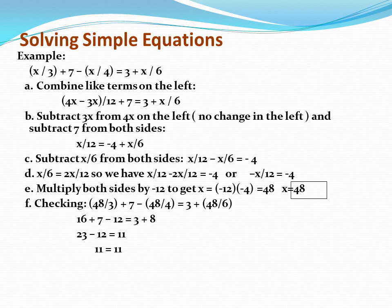Checking, we write 48/3 + 7 - 48/4 = 3 + 48/6, replacing x with 48. Simple division gives us 16 + 7 - 12 = 3 + 8. We have 23 - 12 = 11, and 11 = 11, confirming our solution is correct.